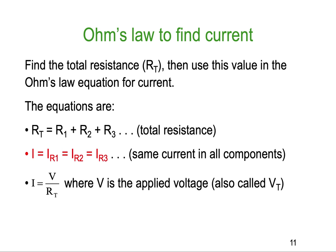So, ohm's law to find current. To find the total resistance, R total, then use the value in ohm's law for the equivalent current, so the current equation. So, in a series circuit, our R total is R total equals R1 plus R2 plus R3, total resistance. And because the current is the same in all parts of the circuit,